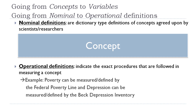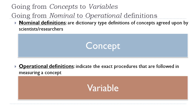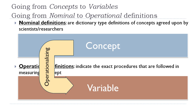What we need are operational definitions, which indicate the exact procedures followed in measuring a concept. For example, poverty can be measured or defined by the federal poverty line. And depression can be measured or defined by the Beck Depression Inventory — something similar to the six questions I presented, except it's much longer and covers all the different aspects of depression. Anytime we can actually measure something via a question, that's a variable. This process is called operationalizing — remember that word, because I'll be using it a lot.